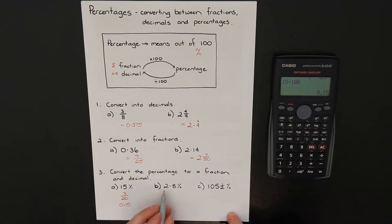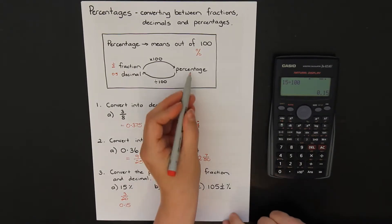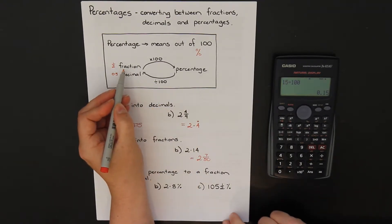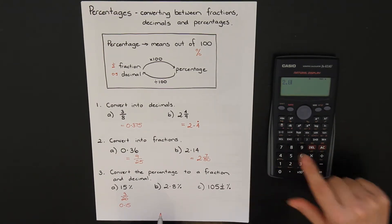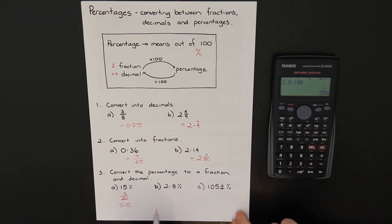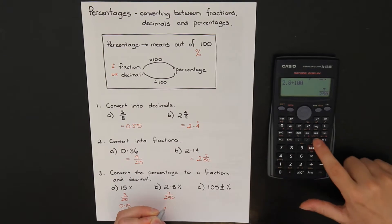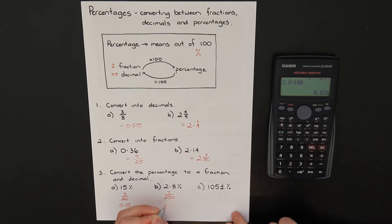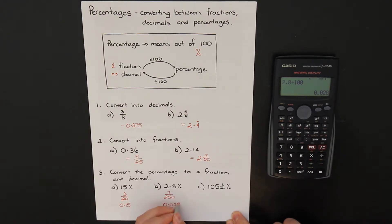Let's do it again for the second question. I have 2.8 as a percentage and I want to change it to the fraction-decimal side, so I need to divide by 100. 2.8 divided by 100 equals — my calculator gives me the fraction straight away. If I push the SD button, it will change it to be 0.028, which is the decimal.